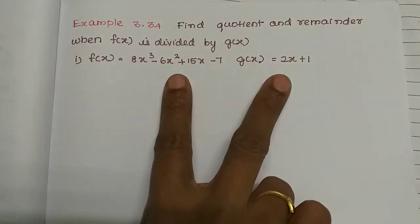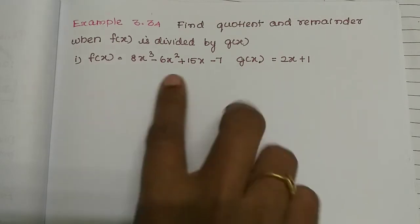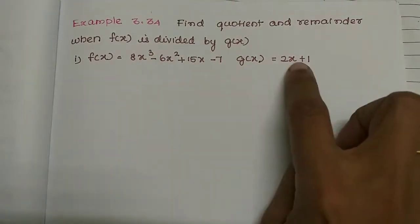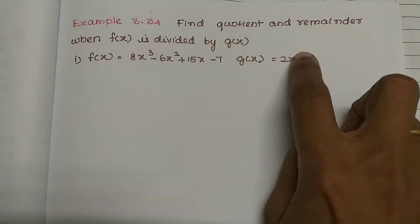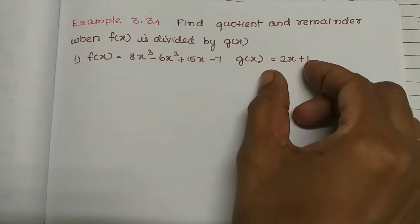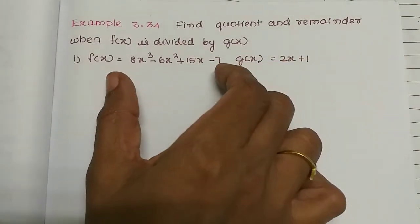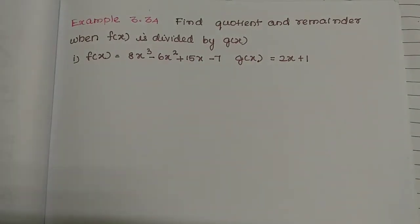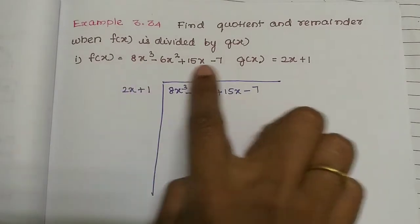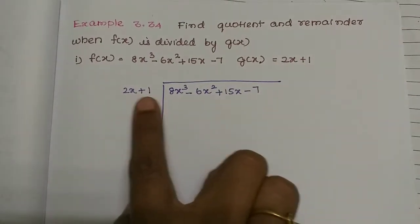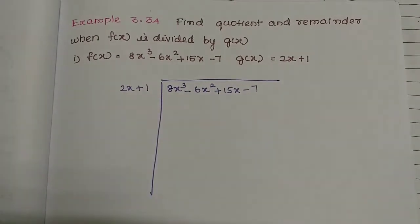If we compare the two polynomials, this is x cube — degree 3 — and this is degree 1, so this is the smaller polynomial. The smaller polynomial divides the bigger polynomial. Now let's start the division. So f of x is divided by g of x, divided by 2x plus 1.